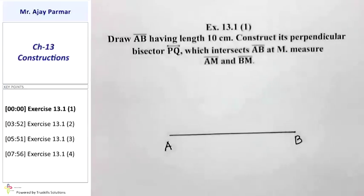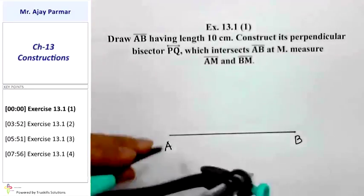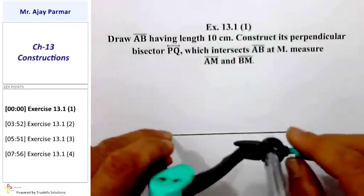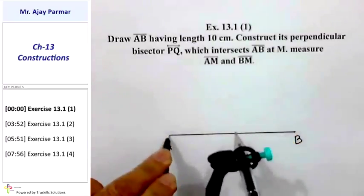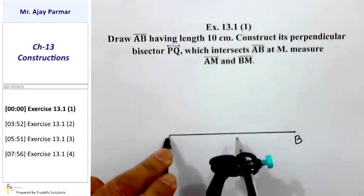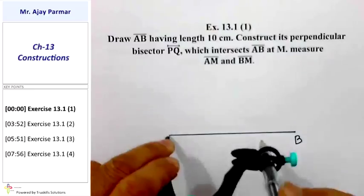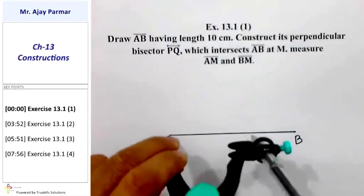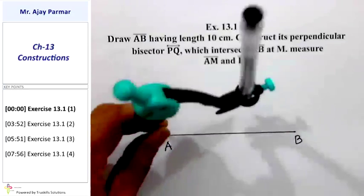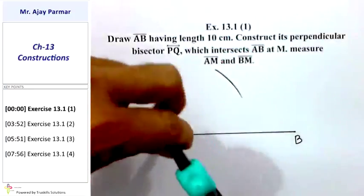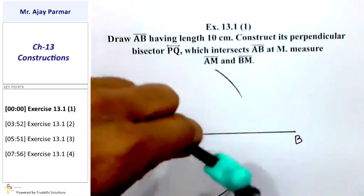I am supposed to draw the perpendicular bisector of line segment AB. I will select any suitable arbitrary radius, which is more than half of line segment AB. You can take randomly any radius more than half of AB. Supposing I am selecting this much radius, I will draw an arc taking A as the center on the upper side, and from A as the center on the lower side.